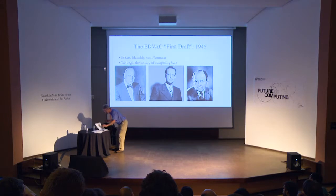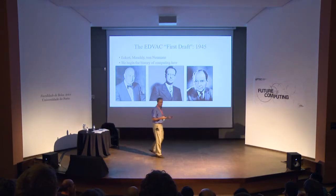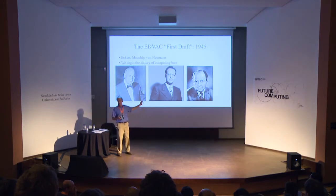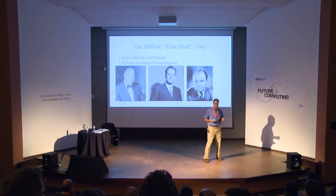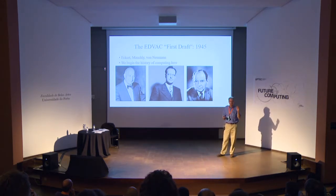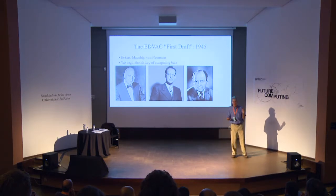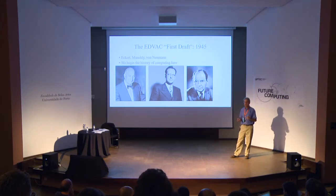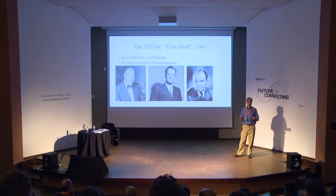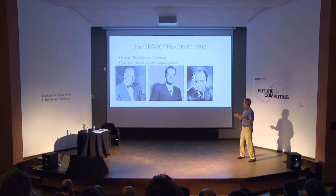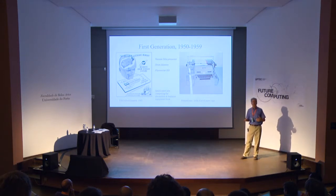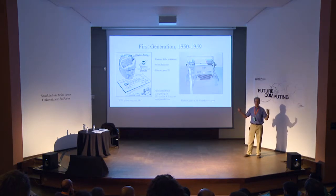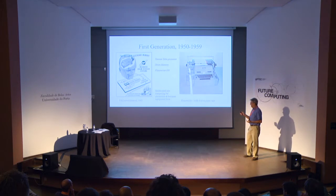So we begin in 1945 with the EDVAC report. The so-called first generation of computing: the report was widely circulated, copies reached England where Maurice Wilkes built a machine in Cambridge called EDSAC — Electronic Delay Storage Automatic Computer — regarded as the world's first practical electronic stored-program computer. There were ones built in Israel, at Oak Ridge — they're called von Neumann machines — and they became commercialized.